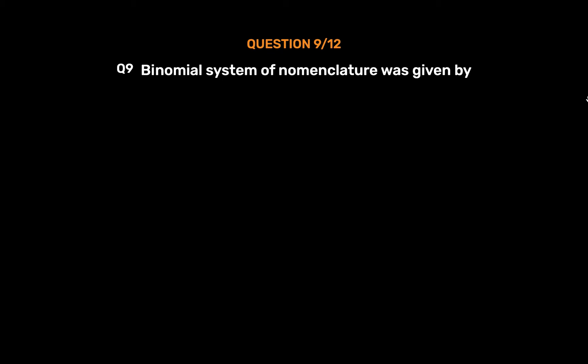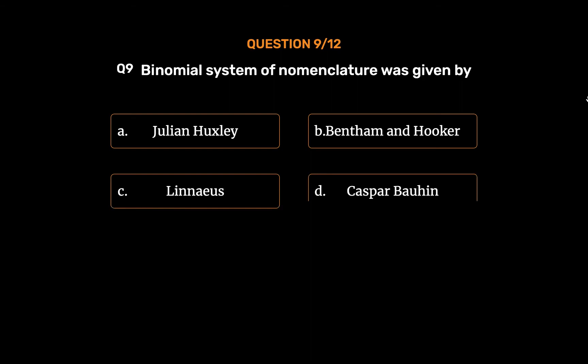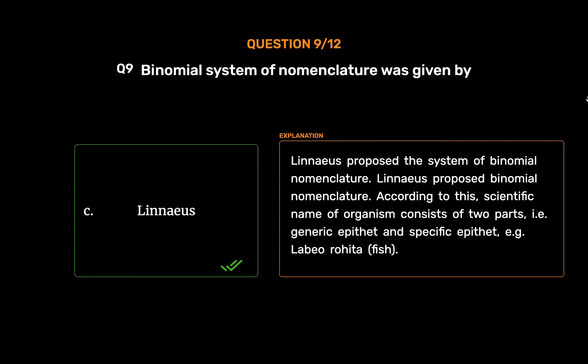Question No. 9. Binomial system of nomenclature was given by. Option A: Julian Huxley. Option B: Bentham and Hooker. Option C: Linnaeus. Option D: Caspar Bauhin. The correct answer is Option C: Linnaeus. Linnaeus proposed the system of binomial nomenclature. According to this, the scientific name of an organism consists of two parts, i.e. generic epithet and specific epithet, for example Labeo rohita, fish.